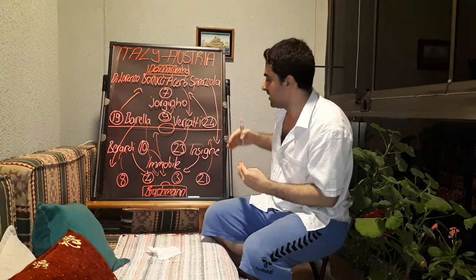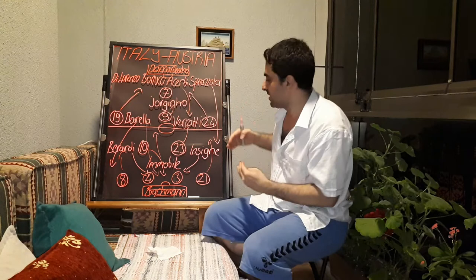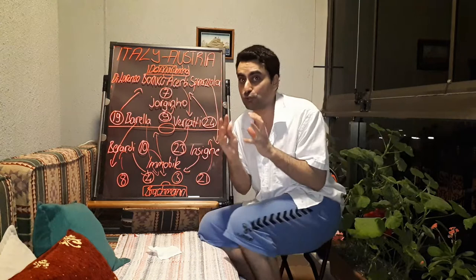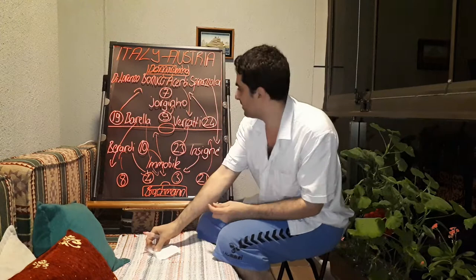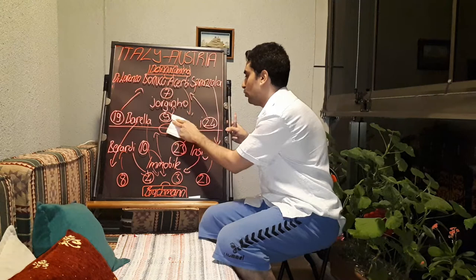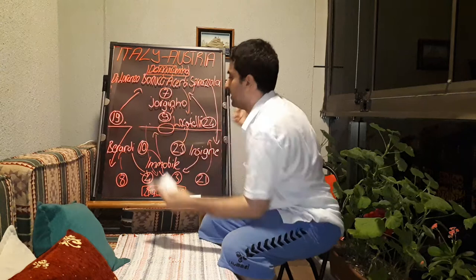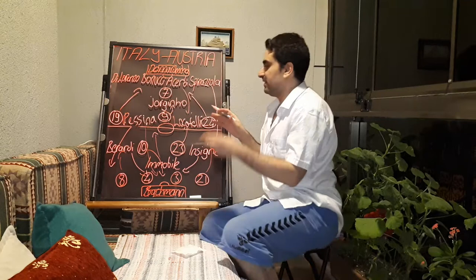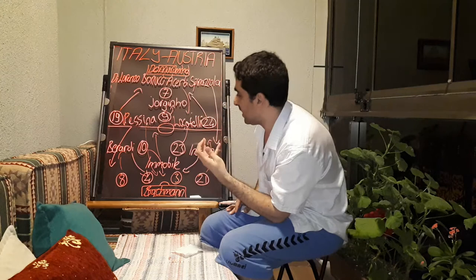Austria made really dangerous attacks from the wings in the second half. Italy was weak in midfield, and Mancini saw this — he made two substitutions because Austria was physically stronger. Verratti and Barella came off. Pessina and Locatelli replaced them, with Locatelli playing in Barella's position and Pessina coming on too. These substitutions strengthened Italy's midfield and the game became more balanced.